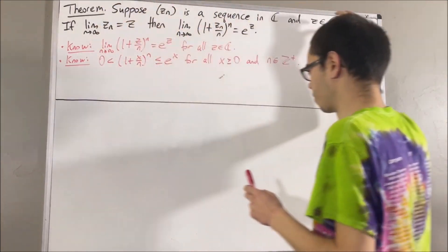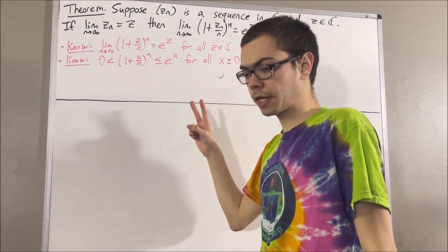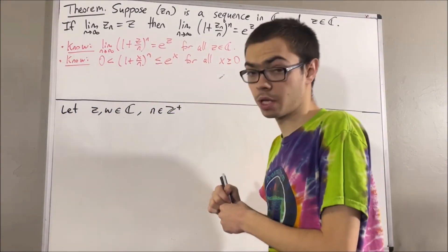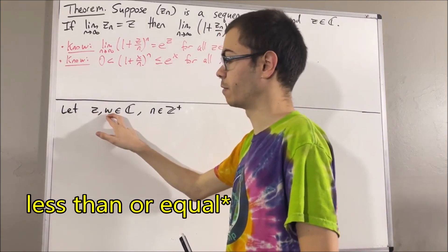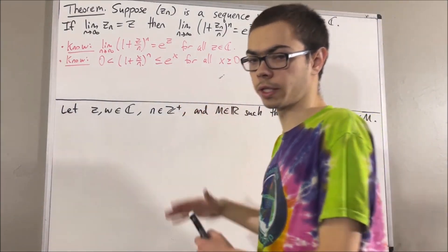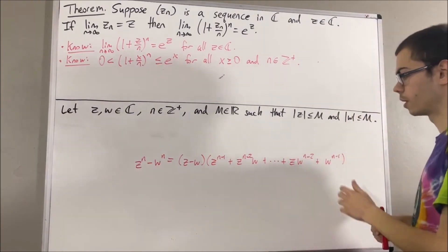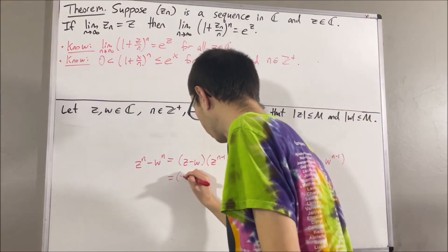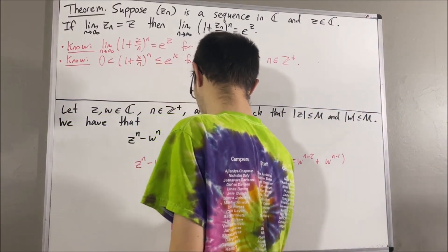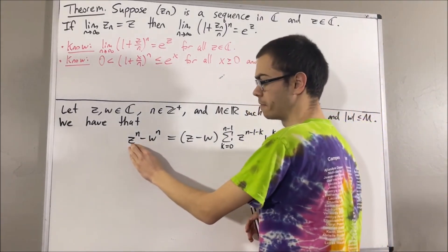Before we get into the proof of this theorem, we are first going to prove some preliminary results. For the first preliminary result, let's consider two arbitrary complex numbers z and w, an arbitrary positive integer n, and an arbitrary real number M such that the absolute value of z is less than M and the absolute value of w is less than M. For complex numbers, we have the following equality, which we can express in summation notation. Now we are going to consider the absolute value of z to the n minus w to the n.